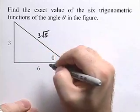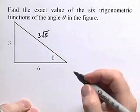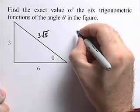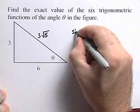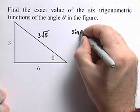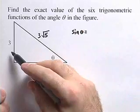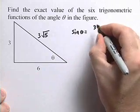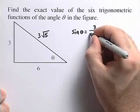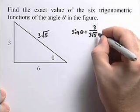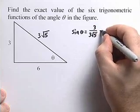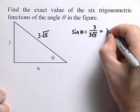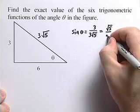When we know all three sides, we can find the values of our trig functions. We'll start with the sine: the sine of theta is equal to the opposite side over the hypotenuse, so that will be 3 divided by 3 root 5. If we simplify that, we'll get the square root of 5 divided by 5.